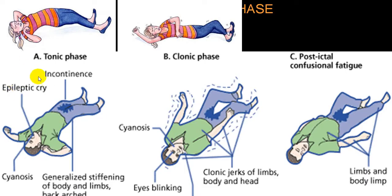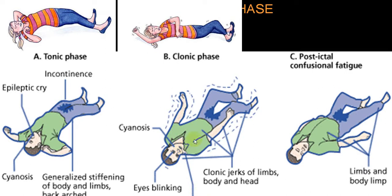In the tonic phase, the person will have severe muscle spasm, opisthotonus posture, epileptic cry, involuntary evacuation of bladder and bowel, and the person can develop cyanosis. There will be generalized stiffness of the body and limbs, and the body can arch like opisthotonus. During the clonic phase: alternate jerky movements, involuntary evacuation of bladder and bowel, cyanosis, eye blinking, eyeball rolling up, salivation and frothing from the oral cavity, possible tongue bite and bleeding, and the person can even aspirate. The clonic phase lasts approximately 30 to 60 seconds, maybe a few minutes.